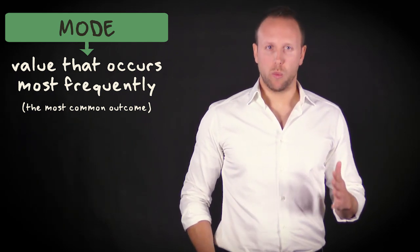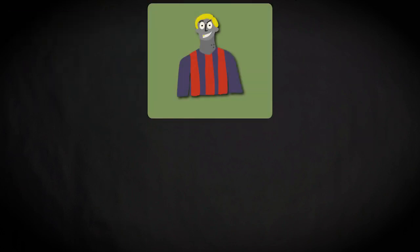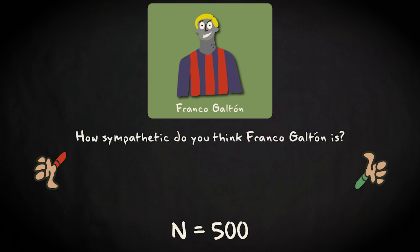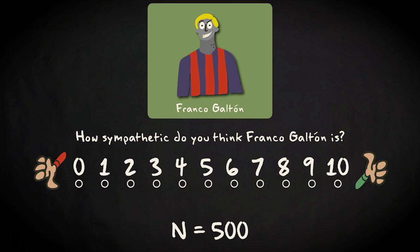You can also have more than one mode. Imagine that there exists a football player that strongly divides football fans. Some people find them very sympathetic, while others find them strongly unsympathetic. Let's name this player Franco Galton. Imagine you have asked a representative sample of the Spanish population of 500 respondents what they think of Franco Galton. Your respondents could indicate on a scale from 0 to 10 how sympathetic they think he is. 0 refers to very unsympathetic, and 10 refers to very sympathetic.